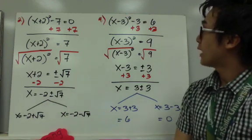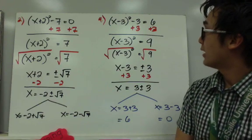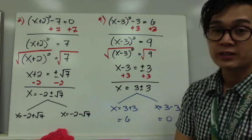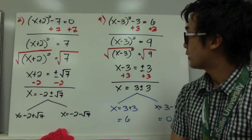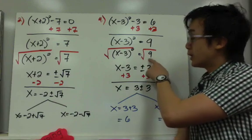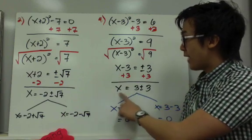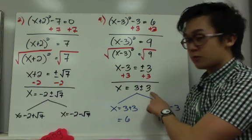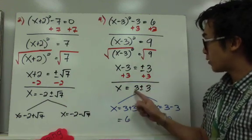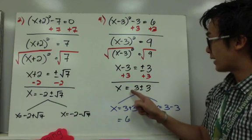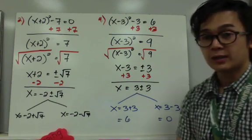For example number 4, we have x minus 3, quantity squared, minus 3 equals 6. We add 3 on both sides to get x minus 3 squared equals 9. We take the square root of both sides to get x minus 3 equals plus or minus 3, since the square root of 9 is 3. Adding 3 on both sides gives x equals 3 plus or minus 3. Splitting into two answers: x equals 3 plus 3, which is 6, and x equals 3 minus 3, which is 0.